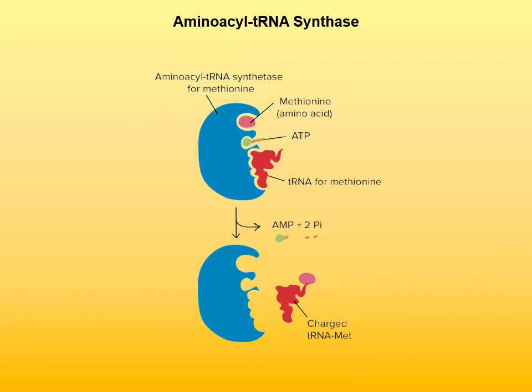Here is the same process shown schematically, where the enzyme aminoacyl transfer RNA synthase is shown in blue. For example, in this case, methionine is going to be attached to its specific transfer RNA. It shows how the transfer RNA interacts with the enzyme, with two opposite ends reacting with it. The ATP molecule is also attached to the enzyme along with methionine. Upon completion of the reaction, the charged transfer RNA leaves the enzyme.